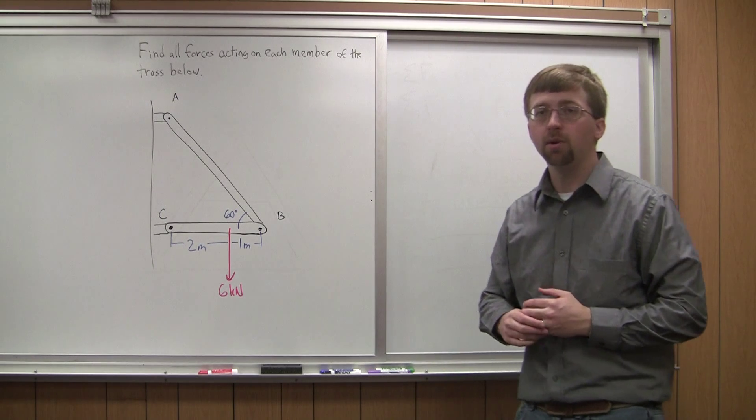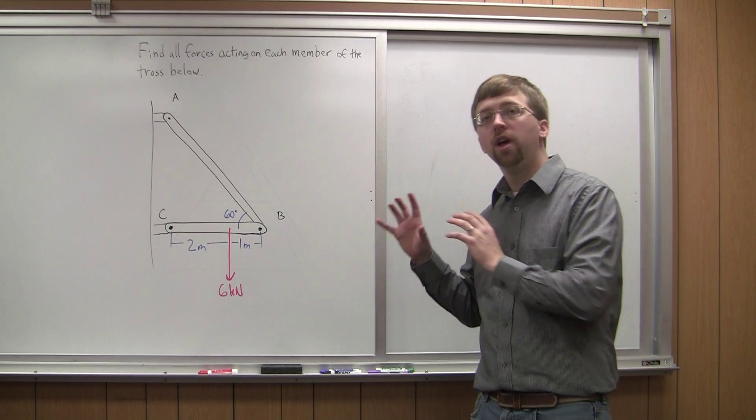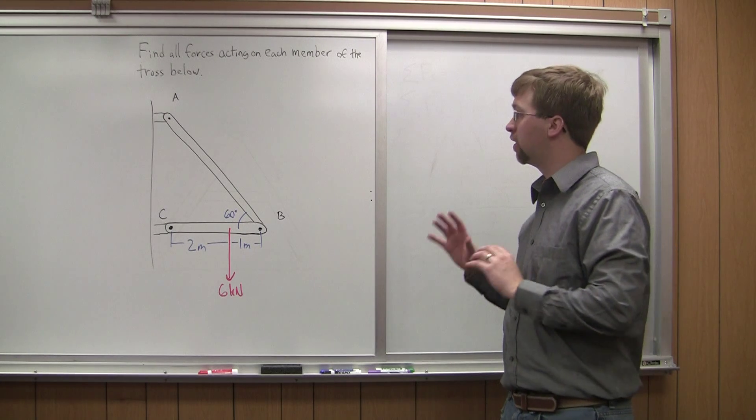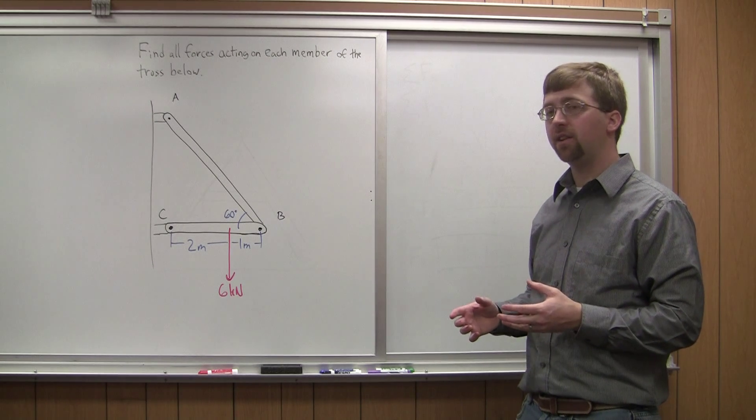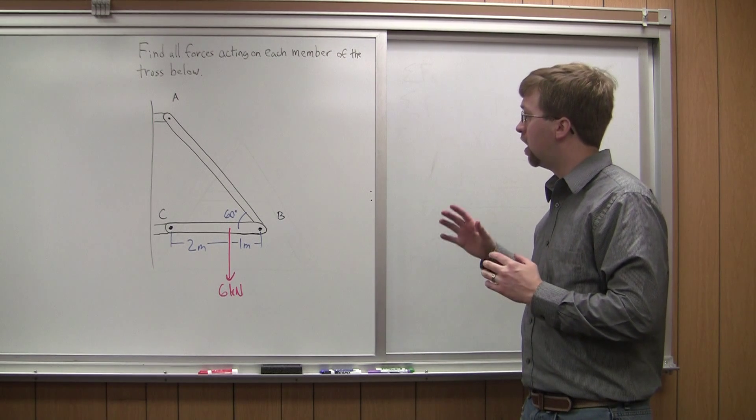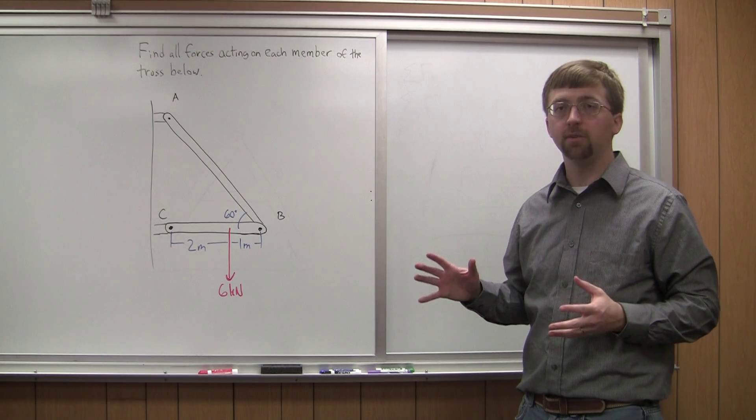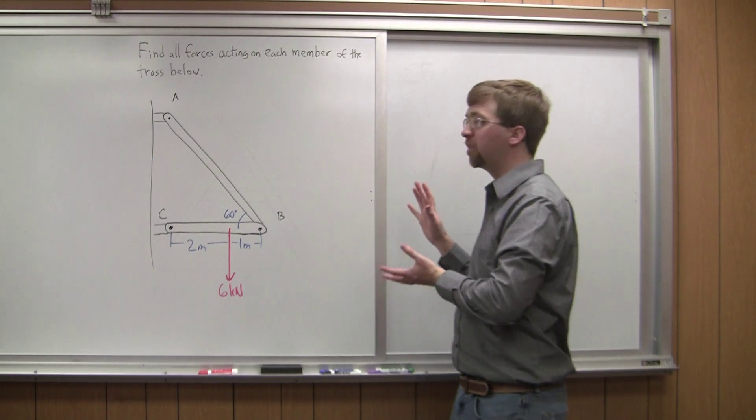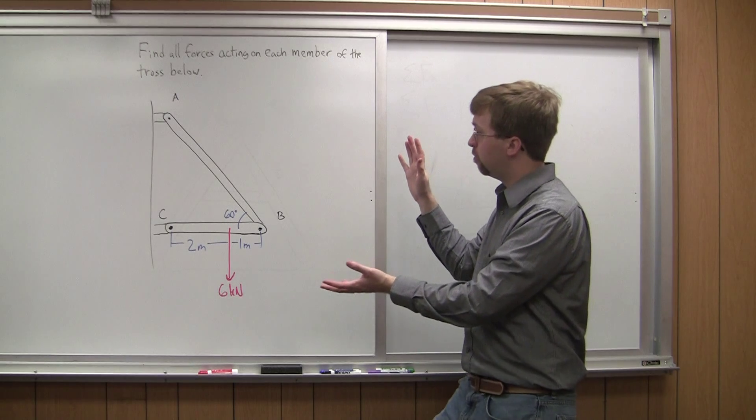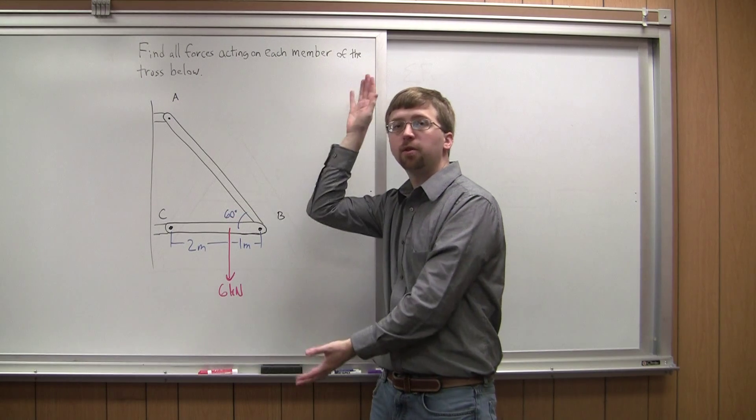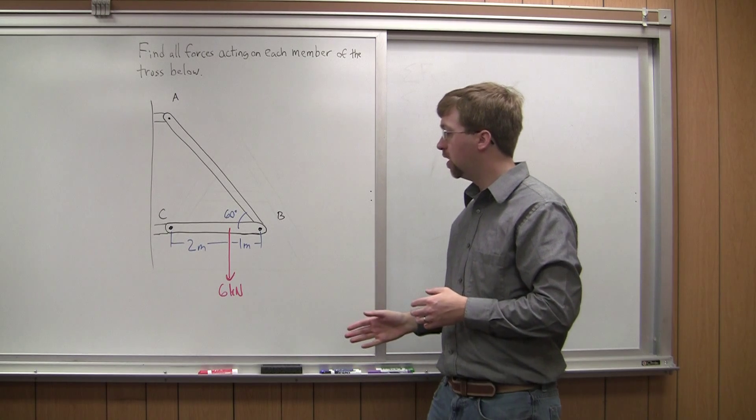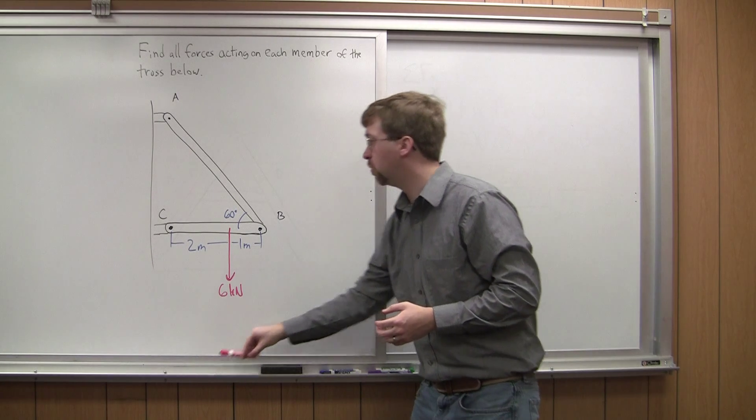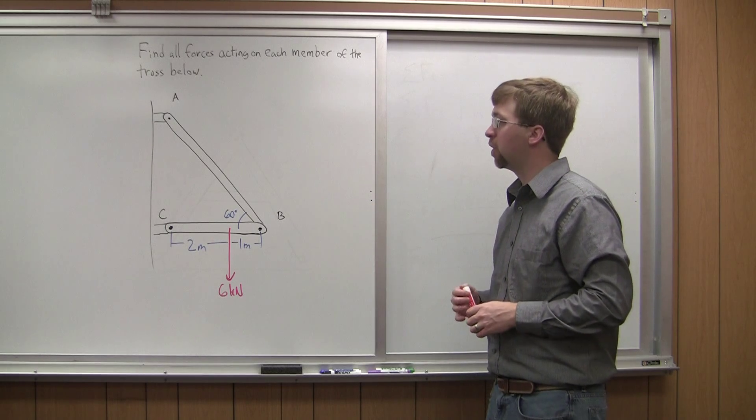Normally the first thing we would do is separate this from the wall and analyze it as a rigid body. But we can't do that in this case because the body is not independently rigid. If we imagine separating this whole thing from the wall, there's nothing keeping it from basically being just two members that could swing independently of one another. Because of that we can't just do the equilibrium equations for the whole thing.